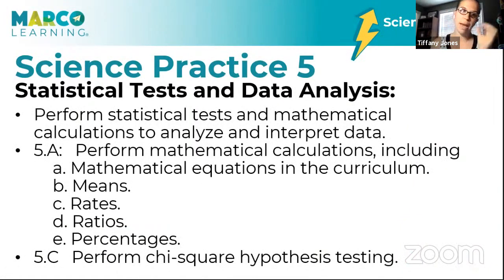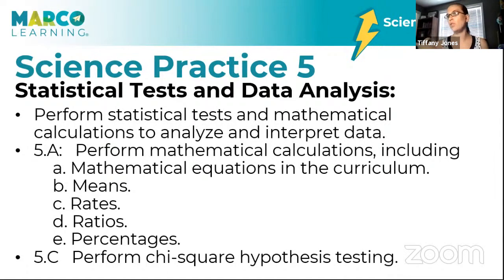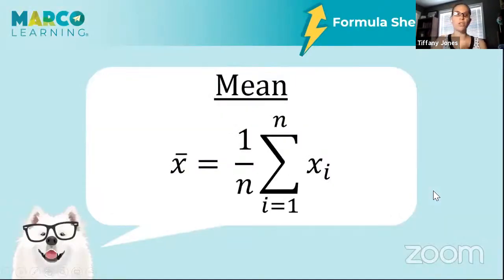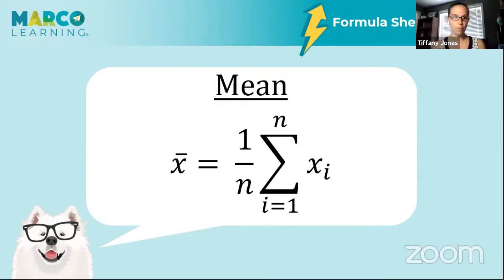Today is all about math. Students asked me to cover some math, and one of the science practices — science practice five — is actually all about math: finding means, using any type of mathematical equation, using rates, ratios, percentages, and the dreaded chi-square. So my thought was, let's just work through the whole formula sheet. You're going to see the equation come up, then we'll do a problem. If you're watching this as a recording later, you're welcome to pause the video, do the problem yourself, and then use the video to check yourself.